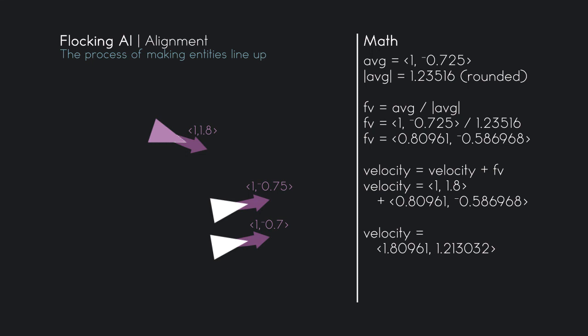And don't forget after all these calculations are done—separation, alignment, and cohesion—after all those calculations are done and the modifications are made to the velocity, we normalize the velocity and multiply it by the speed. We do that to make sure it's following the speed that the object can travel. But you can see that it modified it so it's pointing slightly more counter-clockwise.